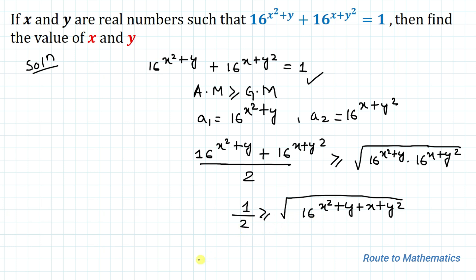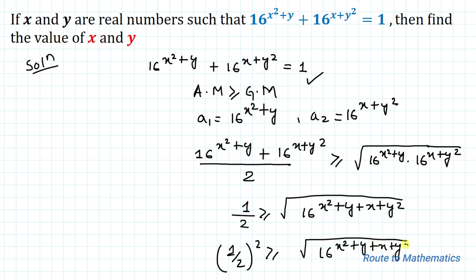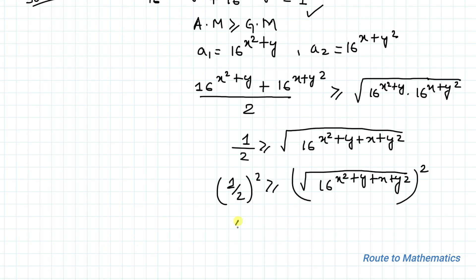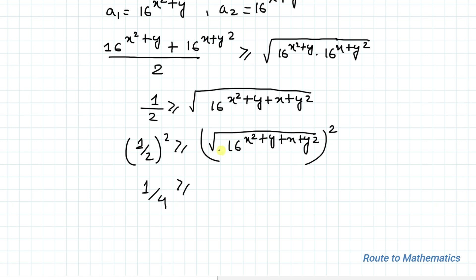In the next step we square both sides of the equation. So we get 1/2 squared, which is greater than or equal to the square root of 16^(x²+y+x+y²), whole squared. This gives us 1/4 greater than or equal to 16^(x²+y+x+y²), since the square and square root cancel out.